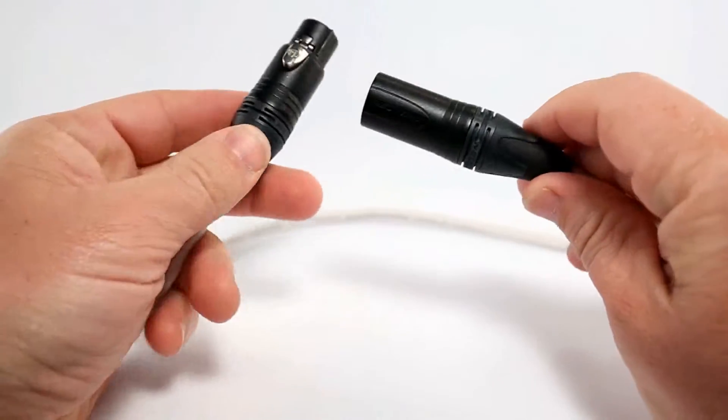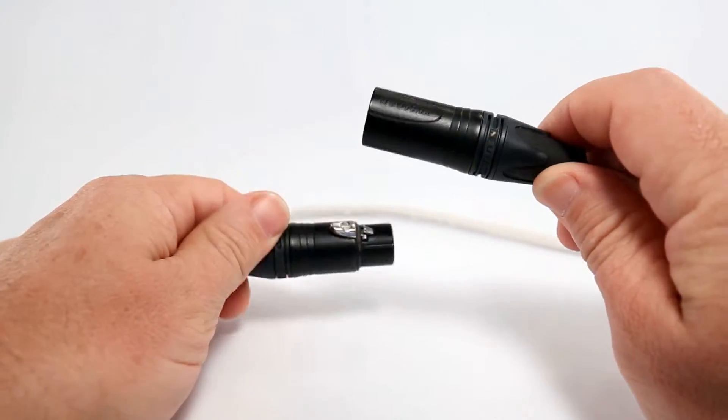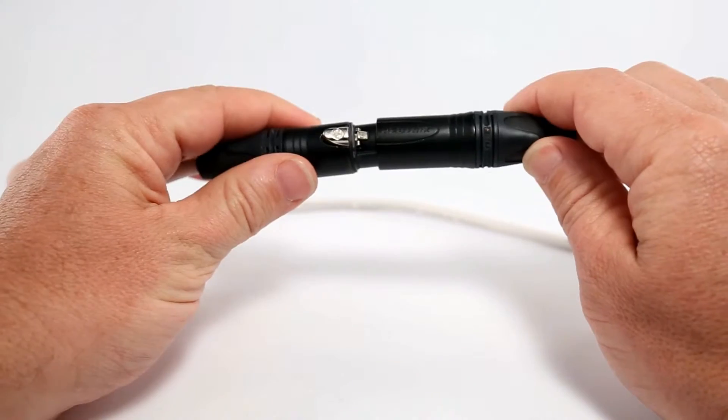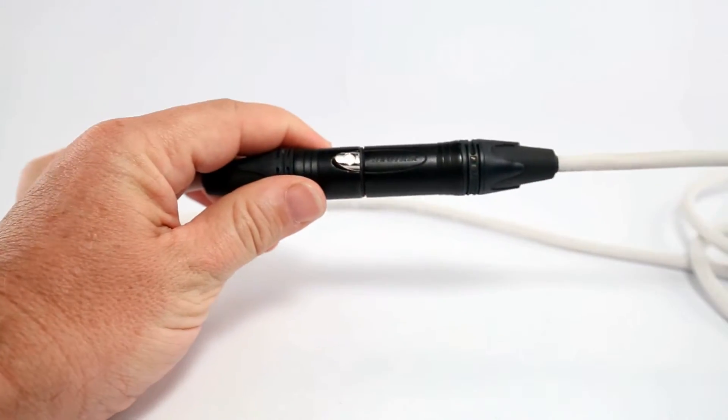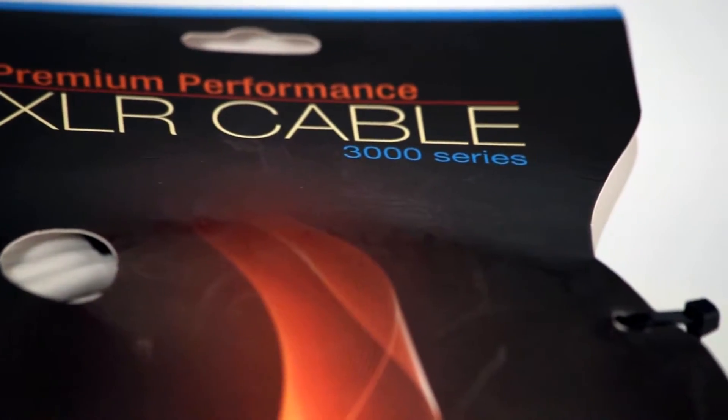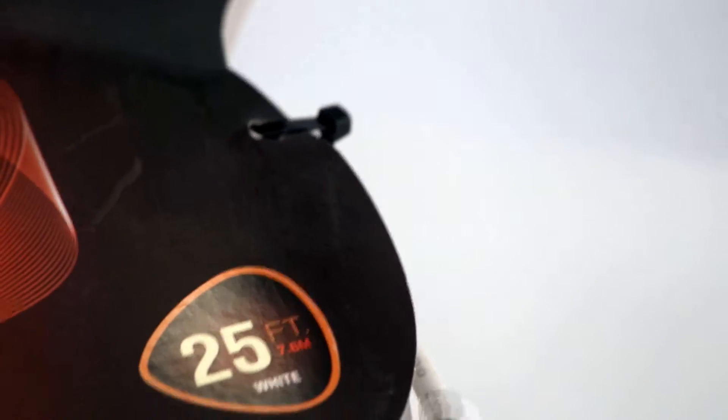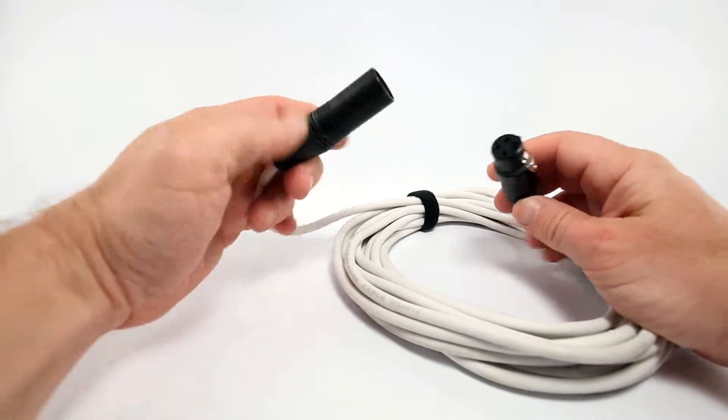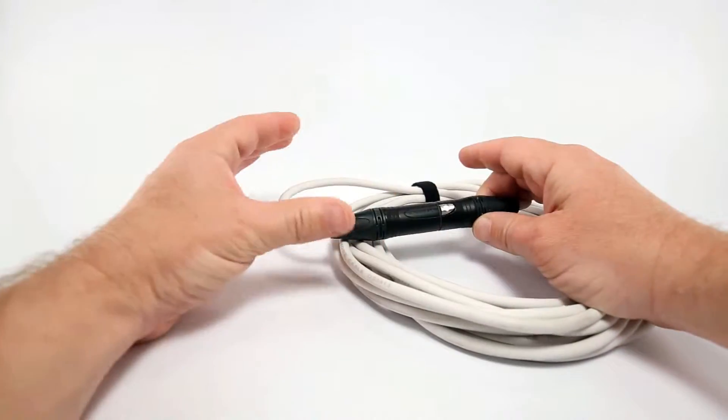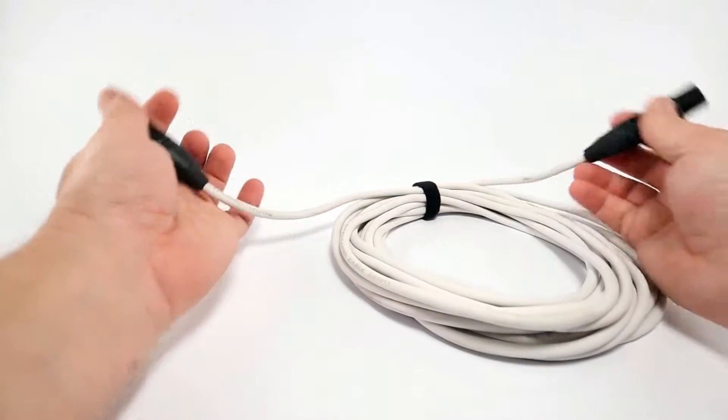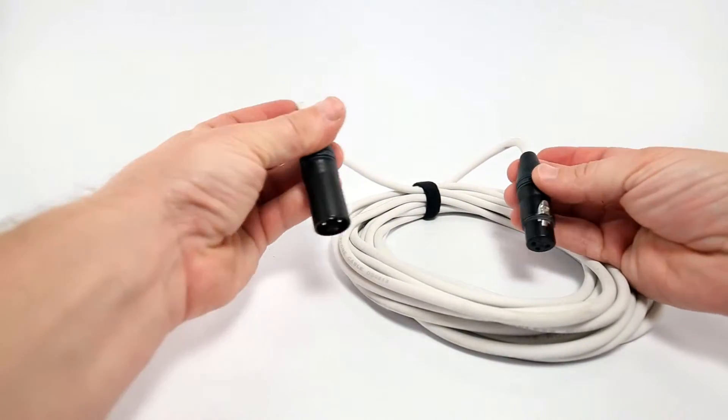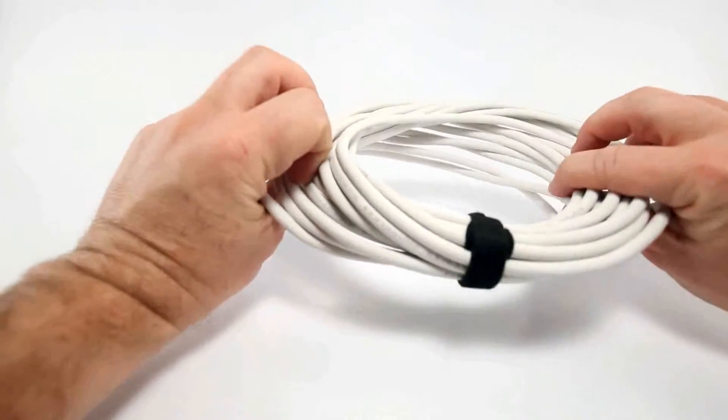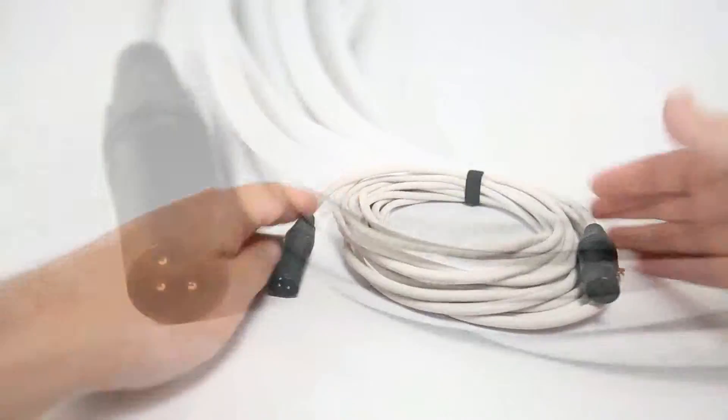Also, if you're looking for these online, the model numbers are super easy to read. For this one, it was the 3025W, right? The 3 is the 3000 series, the 25 is the length, and then lastly the color. 3025-W. So a 10-foot red cable would be a 3010RD. A 100-foot green would be a 3100GR. They also make versions of these that have a 90-degree angled tip.